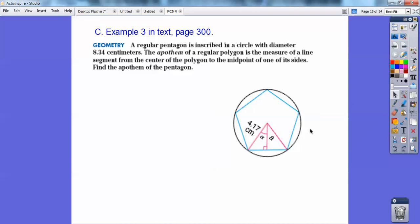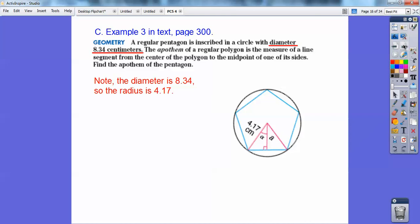Okay, so here's this figure. Here's my pentagon inscribed right there. The apothem is this guy. It goes perpendicularly to one of the sides, and it bisects this side because it's regular right there. This 4.17 came from the diameter. It said the diameter, the whole diameter is 8.34, so the radius is going to be half of that, 4.17.